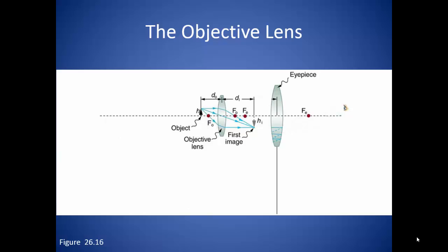Light rays reflecting off of the object travel through and are refracted by the objective lens. These rays converge at a single point to form an image. Image 1 is a real image since it is found on the opposite side of the lens from where the light is coming from. This image is found at a relatively far distance, DI, from the lens and is inverted. It is also slightly larger than the original object, as indicated by HI.